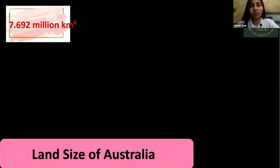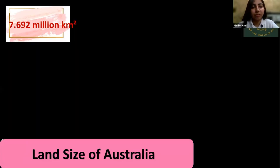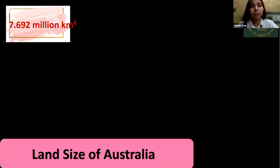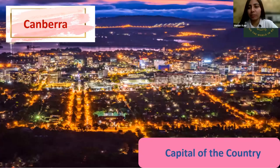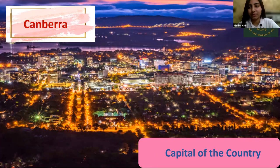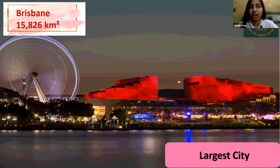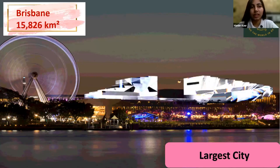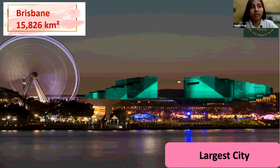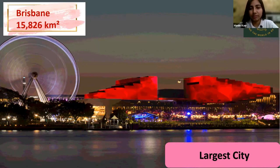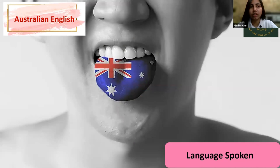Talking about the land size of Australia — it is 7.692 million square kilometers. The capital, as mentioned, is Canberra. The largest city of Australia is Brisbane, covering an area of 15,826 square kilometers. The official language is Australian English.